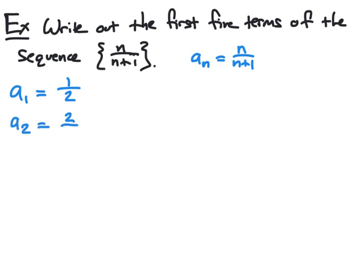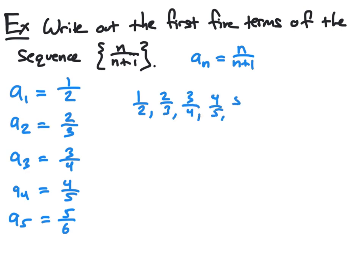a2 will be 2 over 2 plus 1, which is 2 thirds. a3 will be 3 over 3 plus 1, which is 3 fourths. a4 will be 4 over 4 plus 1, which is 4 fifths. And a sub 5 will be 5 over 5 plus 1, which is 5 sixths. And so our first five terms of the sequence are shown here will be 1 half, 2 thirds, 3 fourths, 4 fifths, and 5 sixths.